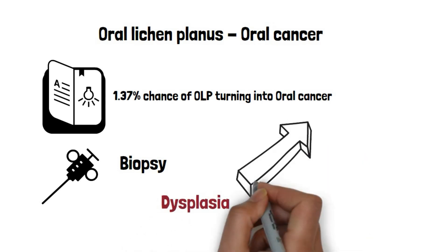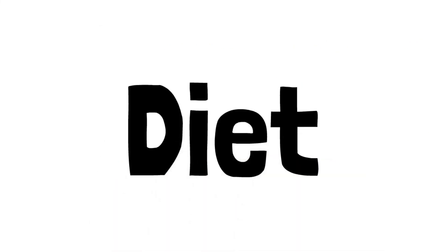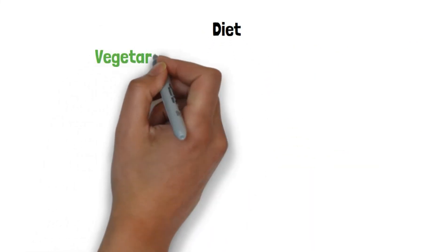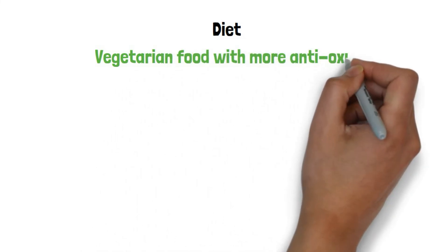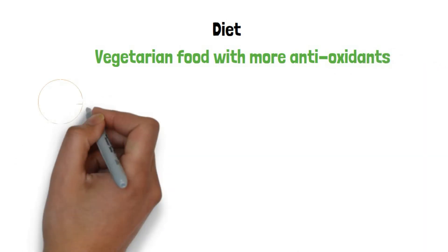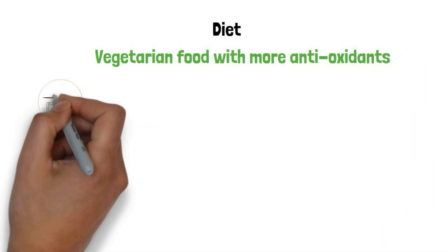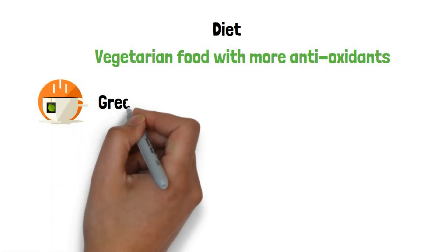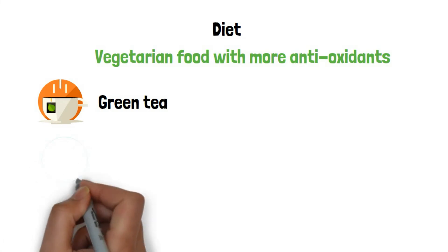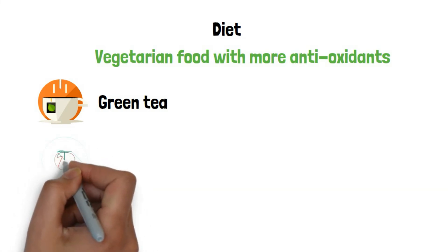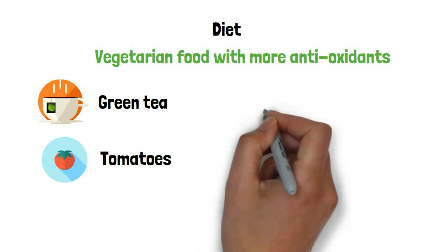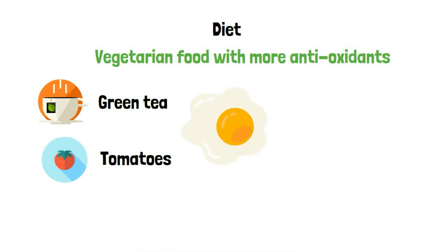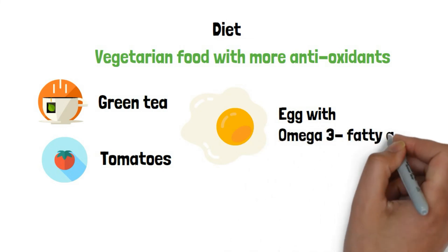The more the dysplasia, the more is the chance of the lesion turning into cancer. I always advise patients with oral lichen planus to have a more vegetarian diet full of antioxidants, as antioxidant-rich food helps in prompt healing. Having green tea in the morning is a good practice as it contains a high concentration of flavonoids. Tomatoes contain a high level of the antioxidant lycopene. Foods rich in omega-3 fatty acids aid in combating inflammation and aid in the fast healing of the disease.